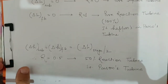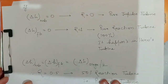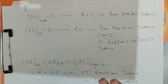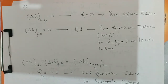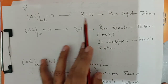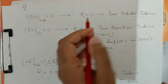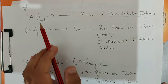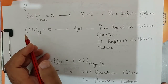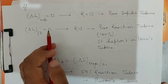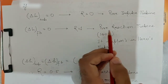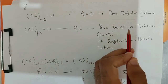From this definition, if delta H of moving blade is zero — meaning there is no enthalpy drop in the moving blade — then the degree of reaction equals zero. Degree of reaction equal to zero means it is the case of a pure impulse turbine, because in an impulse turbine there is no enthalpy drop in the moving blade. The second case: if delta H_fb, the enthalpy drop in the fixed blade, equals zero, then the degree of reaction equals one, meaning it is a pure reaction turbine.